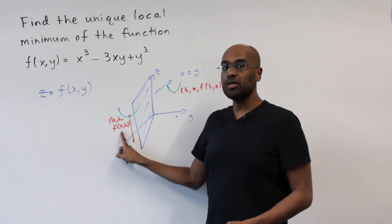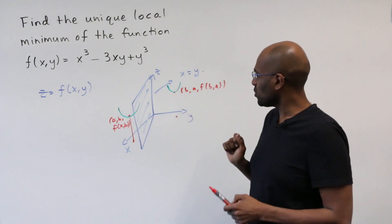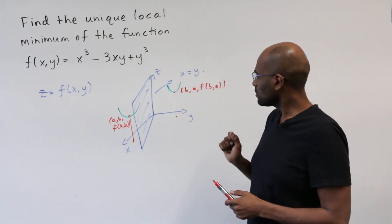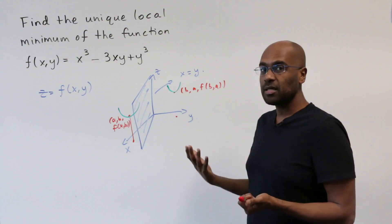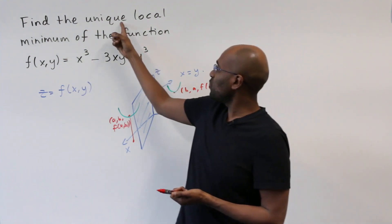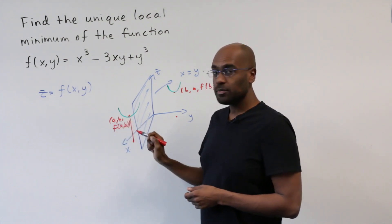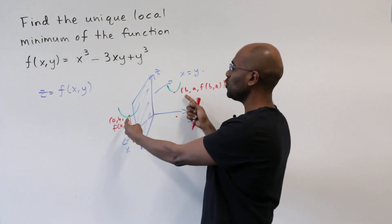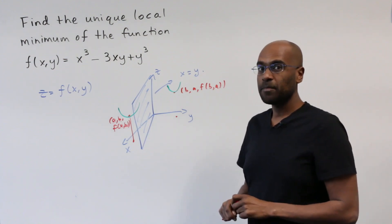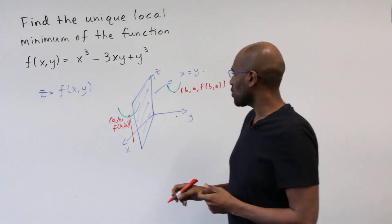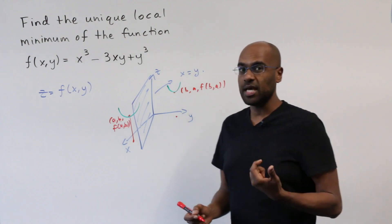So if you have a local minimum here, then we have a local minimum over here as well. Okay, but what does that tell us? That tells us if you have a unique local minimum, there's no way that these values a and b are different. Because if they were, then we'd have at least two local minima. So a local minimum has to occur at a point where the first two coordinates are the same.